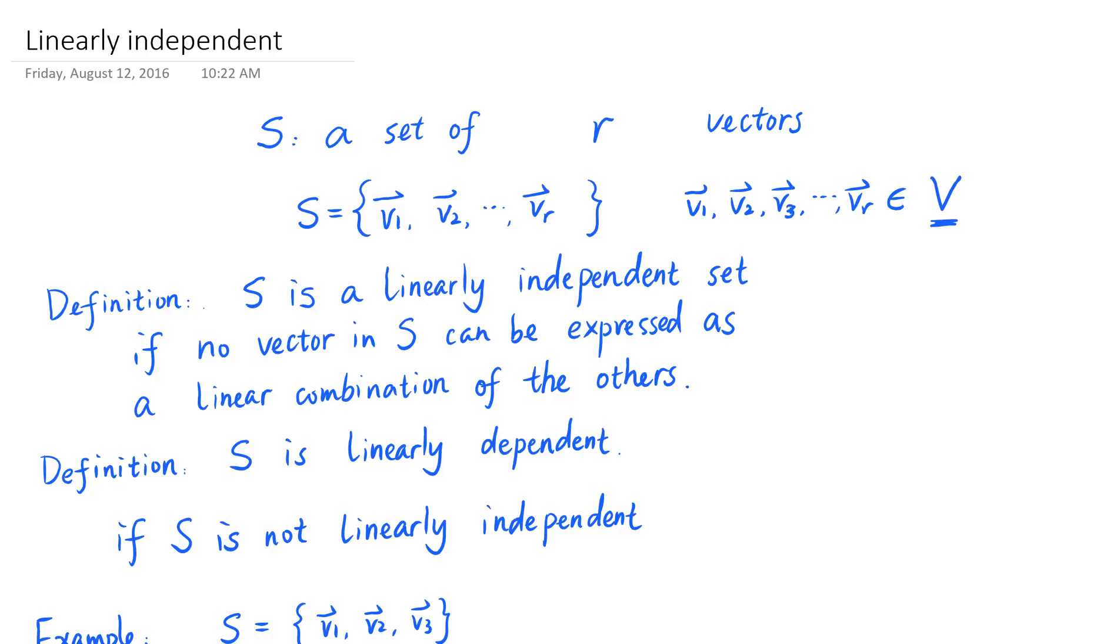So in other words, all of the vectors have to be on board with an agreement that they are not going to be linear combinations of the others. And if one of the vectors votes veto and says, I'm going to be a linear combination of the rest of you, then the set is linearly dependent.